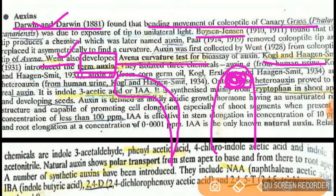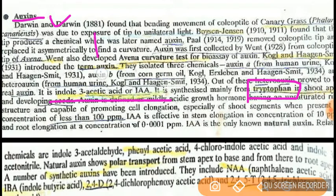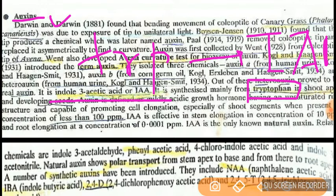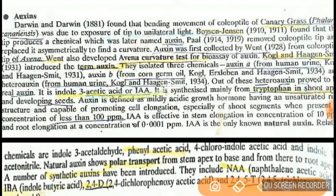The most important point is who termed auxin — the answer is Kogel and Hagen Smith. The chemical name of auxin is indole-3-acetic acid, or IAA. The precursor of IAA is tryptophan — it is from tryptophan that IAA is synthesized. Tryptophan is an amino acid, and the precursor question is very important.